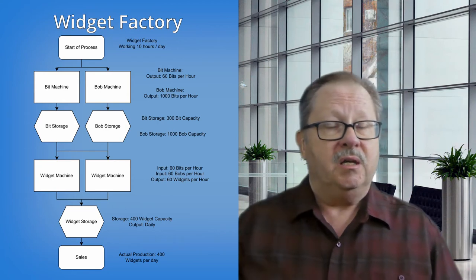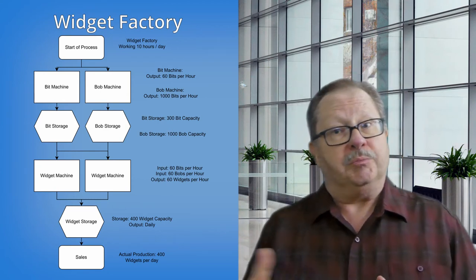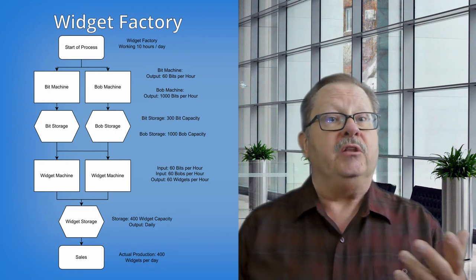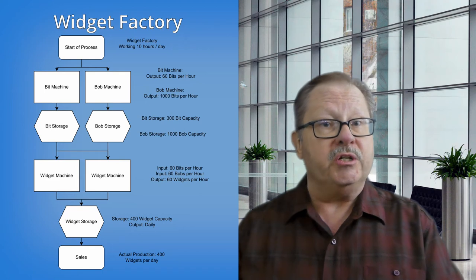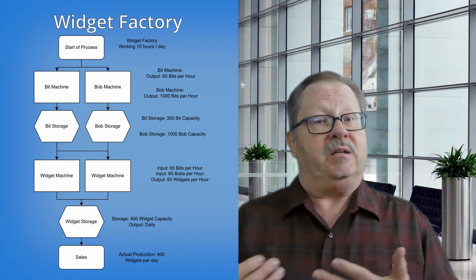This is, in general, the theory of constraints. We identified our first constraint, the widget machine. We exploited it by making sure it ran 100% of the time. We subordinated the rest of the factory by moving storage where it was needed. We elevated the process by purchasing a second machine.